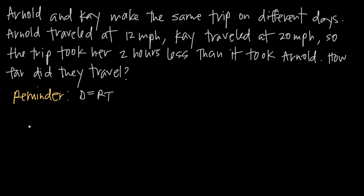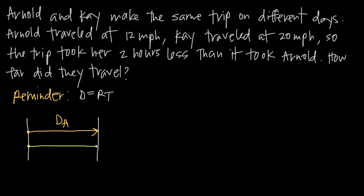The first thing we want to do is draw a diagram of our motion. We're going to say both Arnold and Kay started at the same point and traveled to the same endpoint. We'll call Arnold's distance D sub A, and Kay's distance D sub K. Because they made the same trip and we know they traveled the same distance, we can say that D sub A is equal to D sub K.